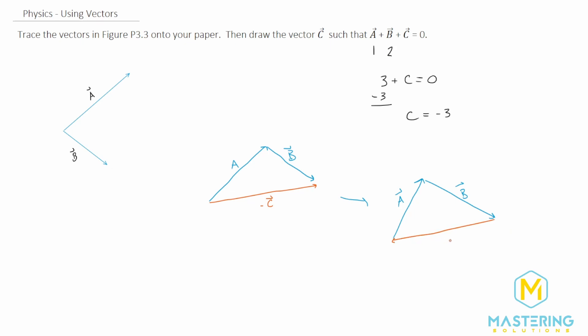So this is what the picture will look like for A plus B plus C to equal zero. The resultant, if you add all of these vectors together, will be zero.